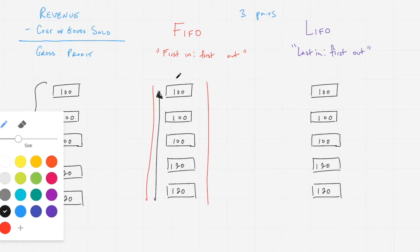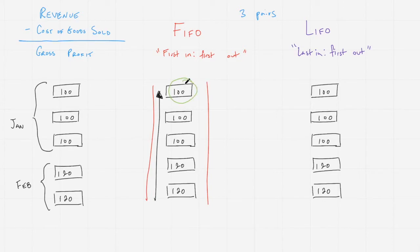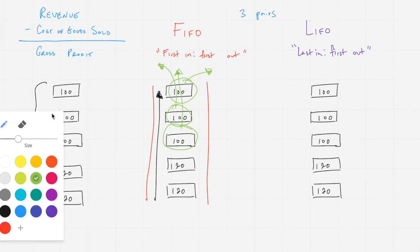Because these were the first ones to come in under FIFO, this one is also the first one to come out. We begin picking with this $100 pair here, and then once we've sold that pair, we pick from this $100 pair here, and once that's sold, we pick from this $100 pair here. These were the first three to come in, and these are the first three to go out, hence first in, first out.